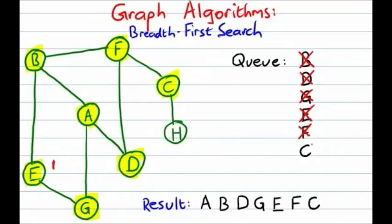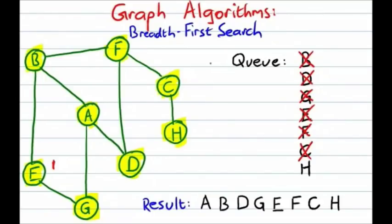Back to the queue to decide where to go next — it tells us to go to C. We go to C and take a look at all the vertices connected to C. We've been to F already, haven't been to H, so we visit H, mark it as visited, add it to the queue, and we're done with C. Now we go back to the queue, see that H is at the head, dequeue it, and take a look at everything connected to H. Nothing new there, so we're done with H. When we go back to the queue, we see it's empty, which tells us that this traversal is complete.